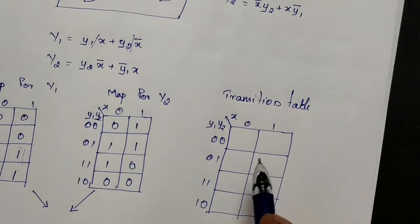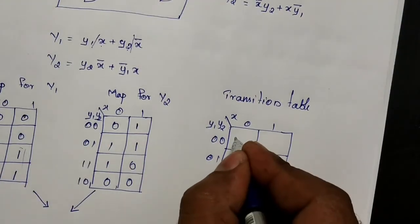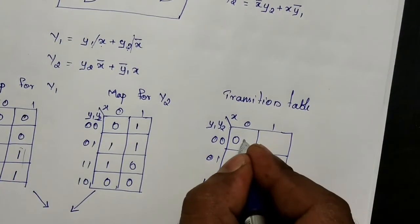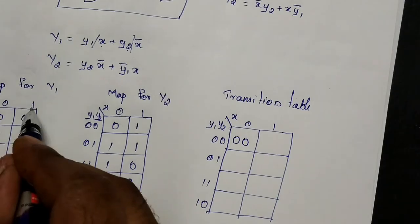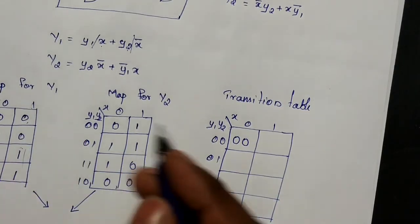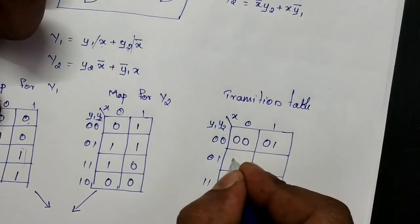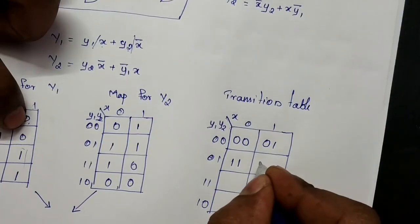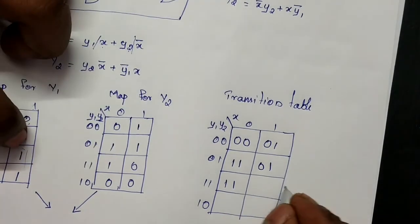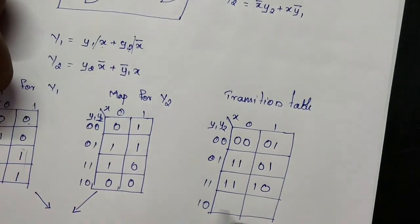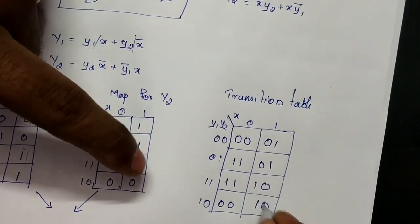For present state 00 and input 0: capital Y1 = 0 and Y2 = 0. For present state 00 and input 1: Y1 = 0 and Y2 = 1. For present state 01 and input 0: Y1 = 1, Y2 = 1. For present state 01 and input 1: Y1 = 1, Y2 = 0. For present state 11 and input 0: Y1 = 0, Y2 = 0. For present state 10 and input 1: Y1 = 1, Y2 = 0.